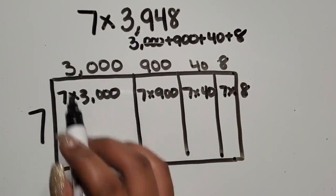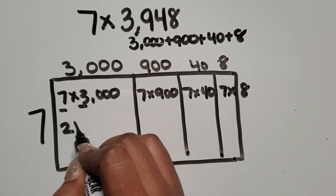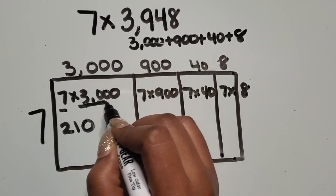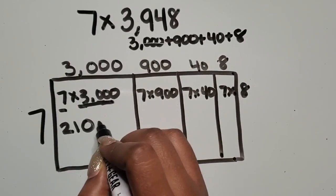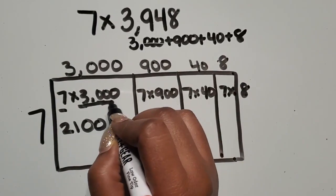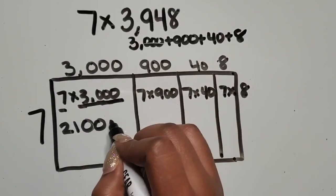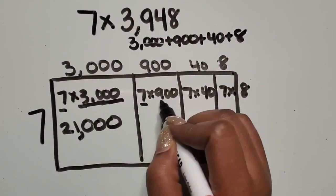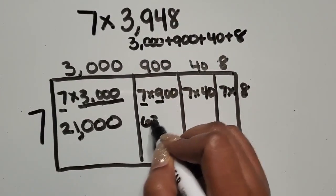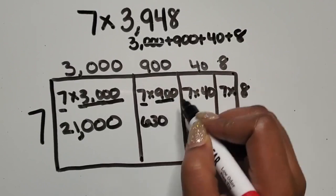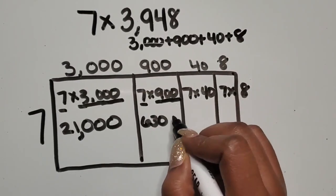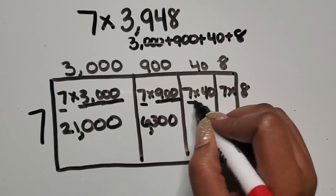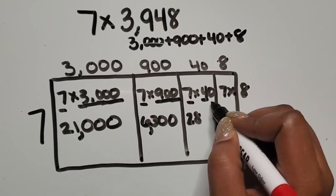Seven times three is 21. Ten times greater than that would be 210. Ten times greater than 210 would be 2,100. Ten times greater than 2,100 would be 21,000. Seven times nine is 63. Ten times greater is 630. Ten times greater than that would be 6,300. Seven times four is 28. Ten times greater is 280.